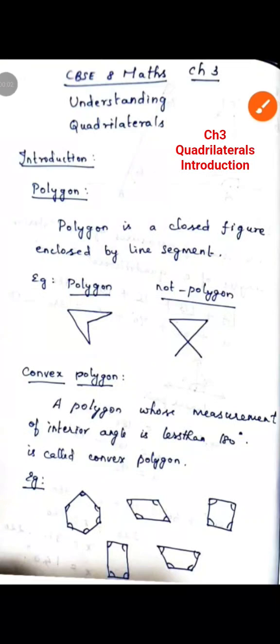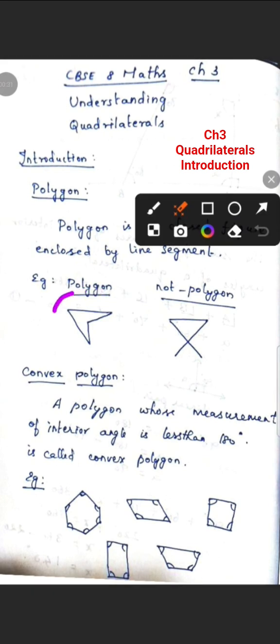Next, chapter number three: Understanding Quadrilaterals. Introduction. First, we are going to learn about polygon. What is a polygon? A polygon is a closed figure, but the figure should be closed by line segments. Using line segments we can draw any diagram — that is called a polygon.